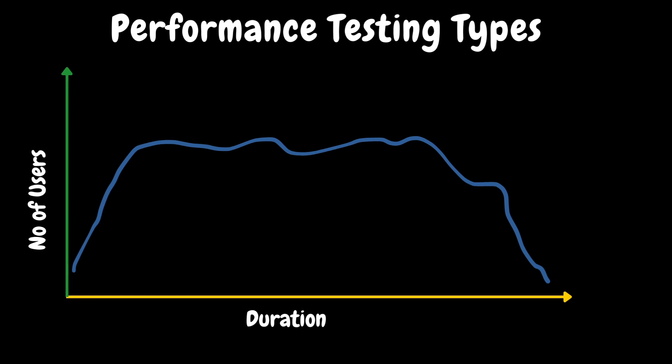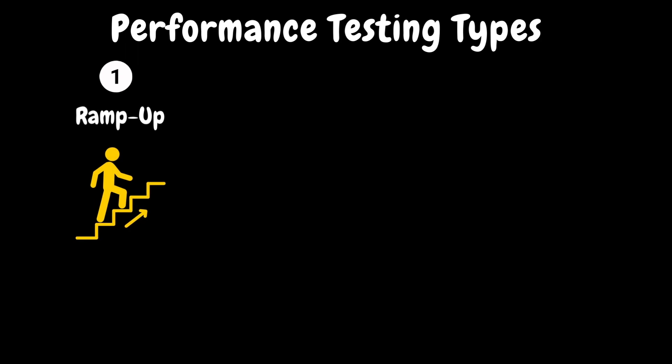Next, we will discuss three important phases used during the performance test scenario design. The first is ramp up — it is a gradual increase in the number of virtual users over a specified period. The main purpose of ramp up is to simulate a realistic scenario where the user load on the system gradually increases at the beginning of the day. It should prevent overwhelming the system with a sudden increase in users, which could lead to inaccurate test results.